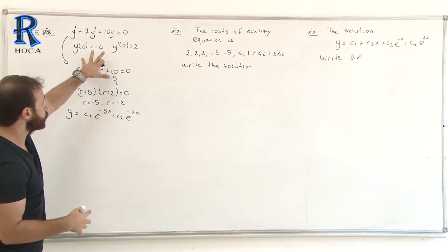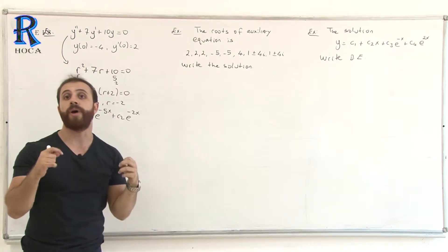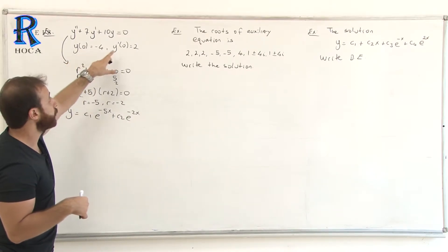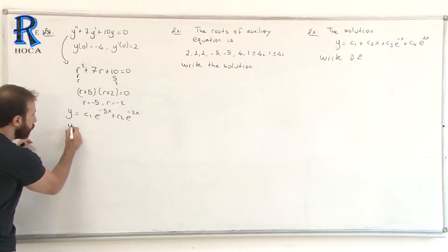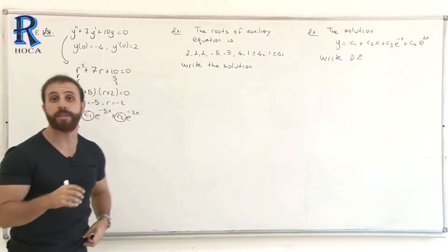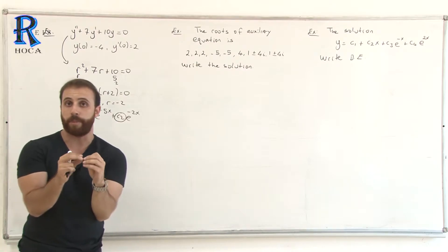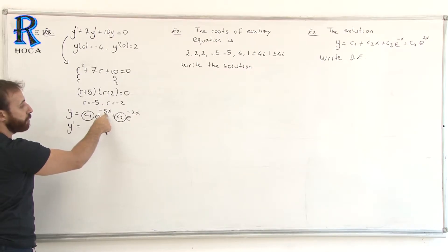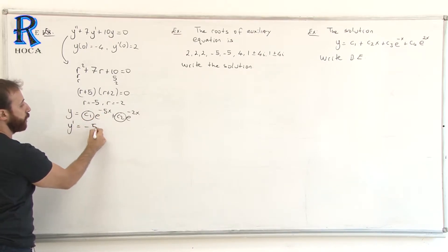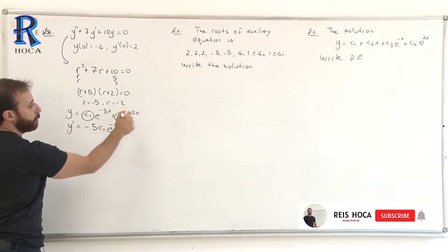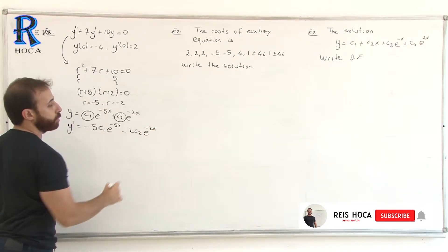The question gives us initial conditions, meaning we need to find constants C1 and C2. We will use the information y(0) = -4 and also its derivative. That's why let's find the derivative. Our aim is to find these constants — that is what an initial value problem means. We will use the derivative, so take the derivative: derivative of e^(-5x) gives -5, so -5C1·e^(-5x), and for the second term, -2C2·e^(-2x).